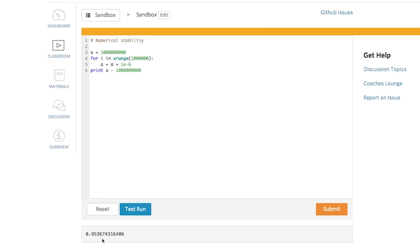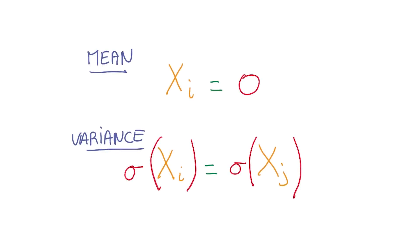We're going to want the values involved in the calculation of this big loss function that we care about to never get too big or too small. One good guiding principle is that we always want our variables to have zero mean and equal variance whenever possible.